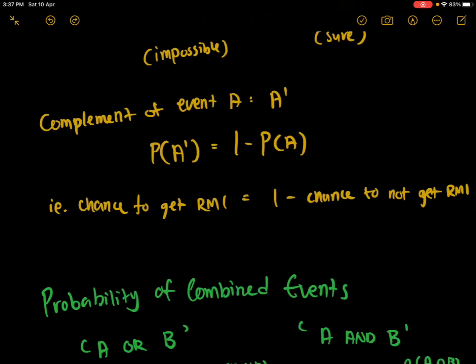The complement of an event A — A complement means the other side. For example, if your A is getting heads, then the complement of A is getting tails. If your A is getting an A for exams, then the complement of A is not getting an A in exams. So the probability of the complement of A is 1 minus the probability of A. For example, if you have a 1 over 4 chance of getting 5 ringgit, then the chance of not getting it would be 1 minus 1 over 4, which is 3 over 4.